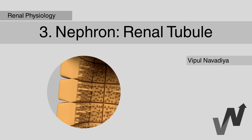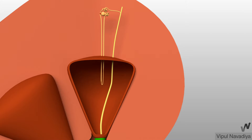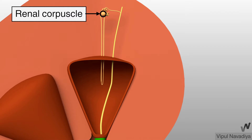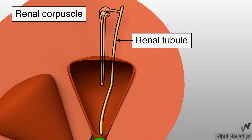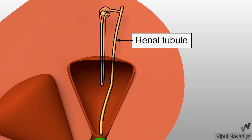In this video, we will see renal tubule. As we saw in the previous video, nephron has two components: renal corpuscle and renal tubule. We have already covered renal corpuscle in the last video and now we will continue with renal tubule.